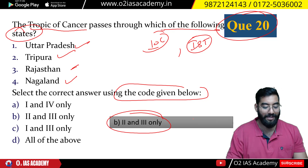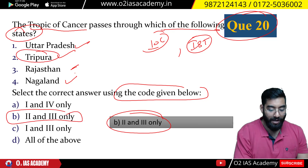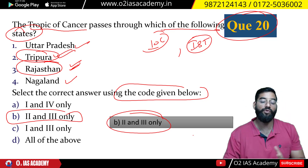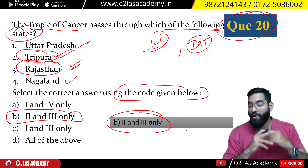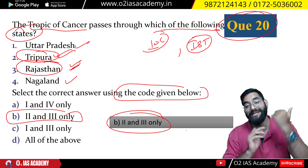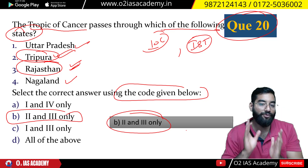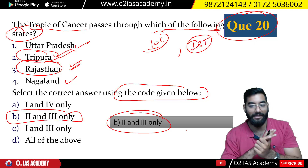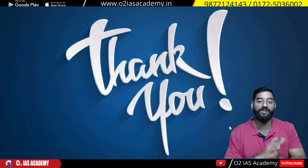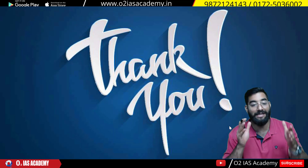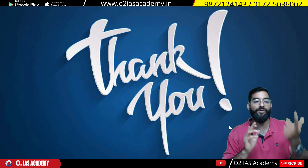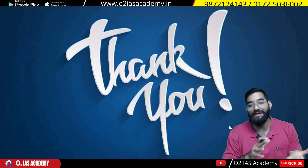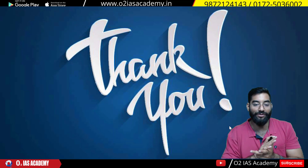Question number 20 answer is B — 2 and 3. Only Tripura and Rajasthan pass through the Tropic of Cancer. Most of the questions asked here are based on map and map-based observation, so make sure when you are preparing geography — especially Indian physiography — you study the map carefully and read it observably so that your questions don't go wrong. Thank you very much for this session. Please write your marks in the comment section. Tomorrow we'll come back, and in the next session we'll be talking about climate, soil, and vegetation. Thank you, bye.